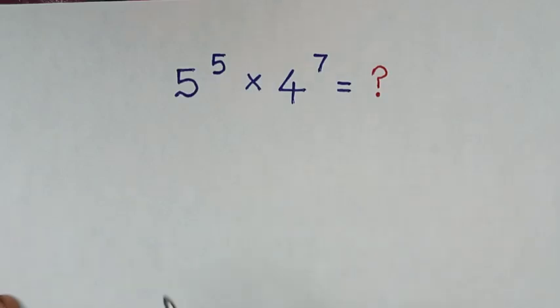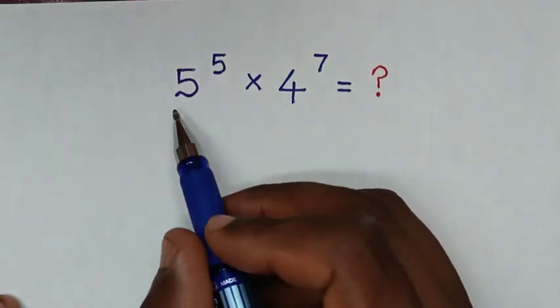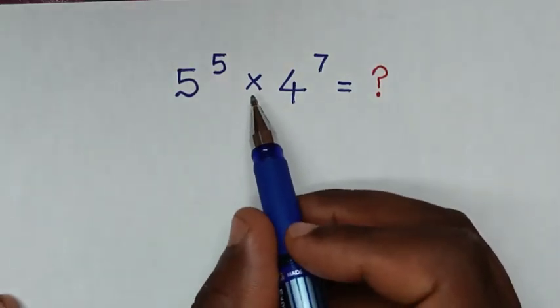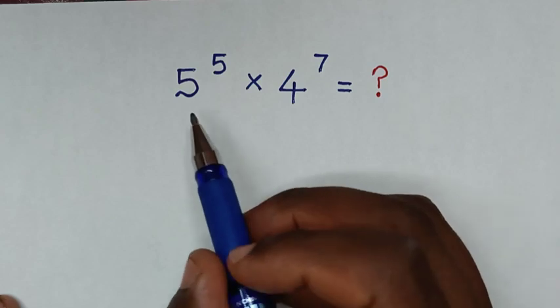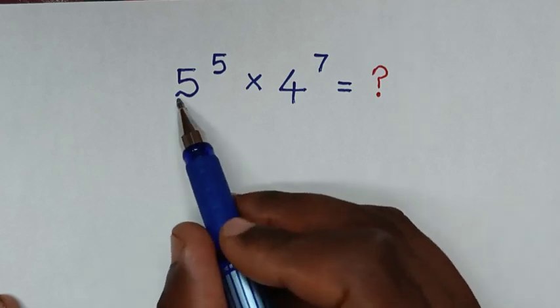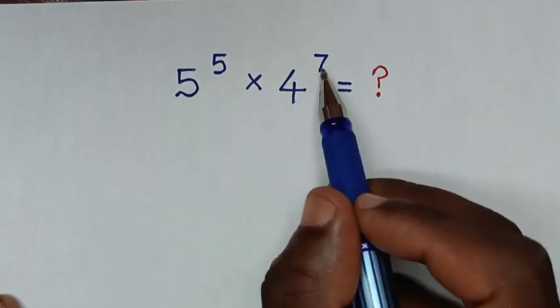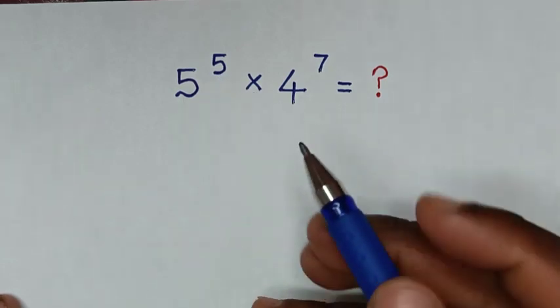Hello, you are welcome to solve this math problem of multiplication of exponents: 5 power 5 times 4 power 7.